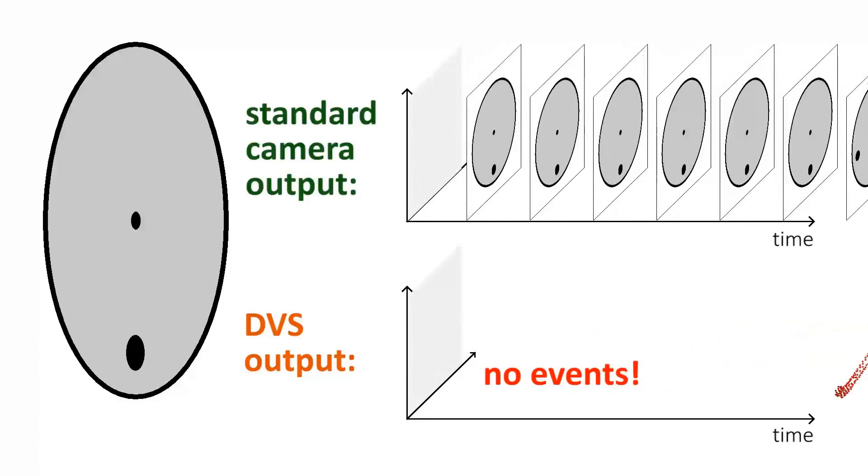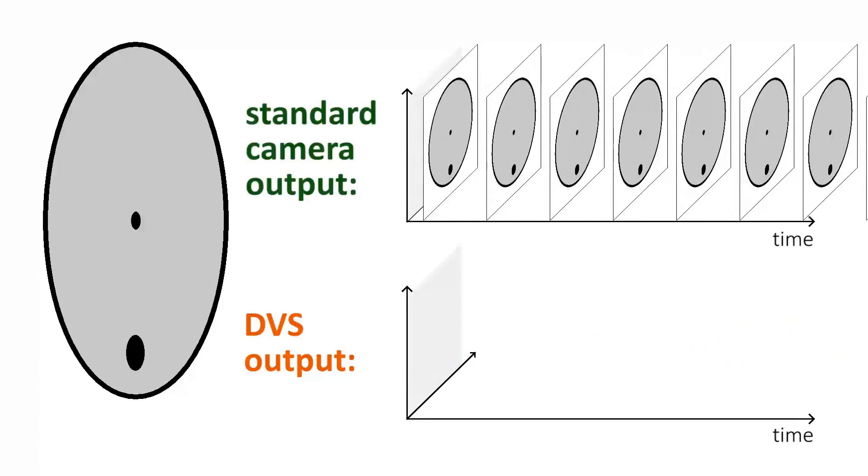When the disk stops rotating, no events are generated at all. On the other hand, the standard camera continues to wastefully send full images.